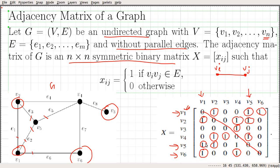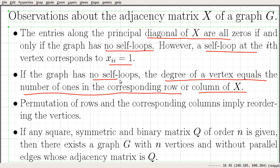Looking at V4: it is connected to V2, V3, V5, and V6, giving it degree four. If you count the number of ones in the fourth row, the count is one, two, three, four — so the degree of V4 is four. Similarly, if you look at that column, the number of ones is one, two, three, four, again confirming the degree of V4 equals four. In general, the number of ones in a particular row or column corresponds to the degree of that vertex, provided the graph has no self-loops.